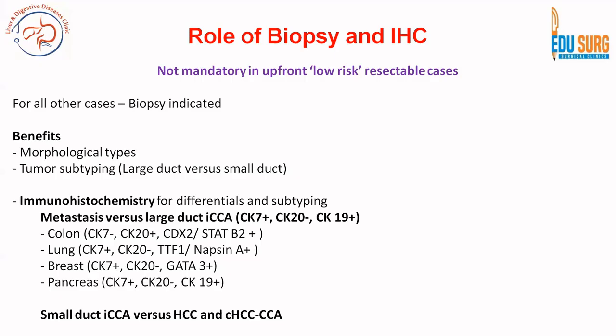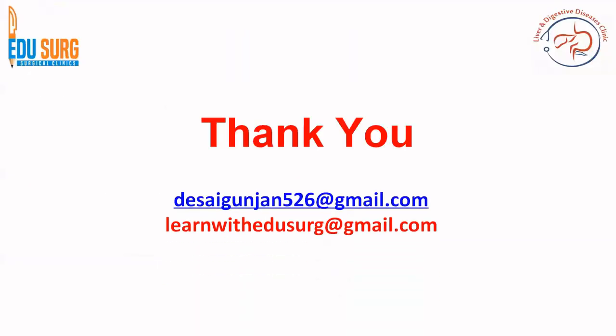We already saw large-duct versus small-duct disease on immunohistochemistry. Colon markers: CDX2 and SATB2 positive. Lung markers: mainly TTF1 and Napsin A positive. GATA3 is breast. CK7 and CK19 positive with CK20 negative is pancreas. All these immunohistochemical markers help in differentiating adenocarcinoma on biopsy in the context of intrahepatic cholangiocarcinoma. With that, we come to an end on how to work up patients of intrahepatic cholangiocarcinoma.